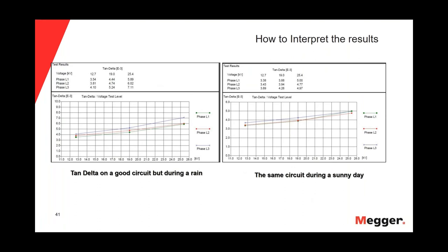The next slide shows how the weather can affect the results of the tan delta. The charts on the left show the tan delta results of a good cable measured during a rainy day — we can see higher tan delta measurements. On the right, the same circuit measured on a sunny day shows improved, lower tan delta values. So the weather can affect the measurements of the tan delta and is something we should consider.